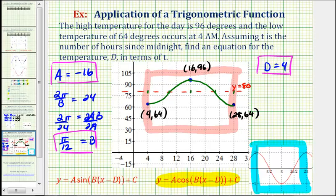And then finally, c affects the shift up or down, or the vertical shift. Because our midline is y equals 80, we know our graph has been shifted up 80 units, and therefore, c is equal to positive 80.